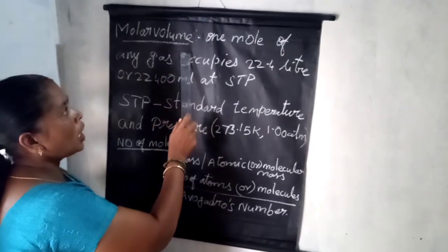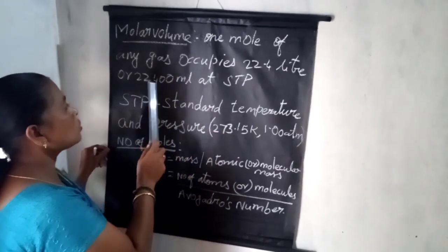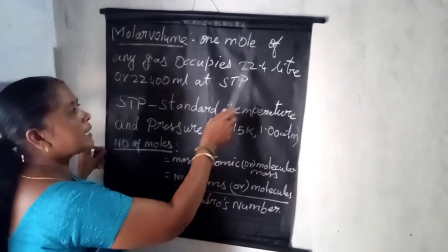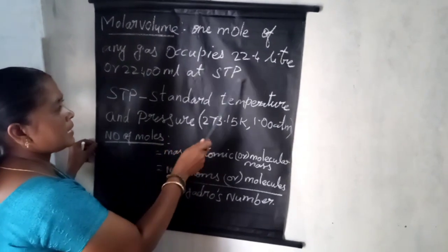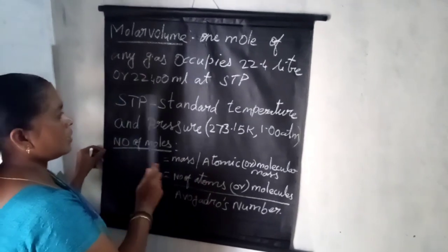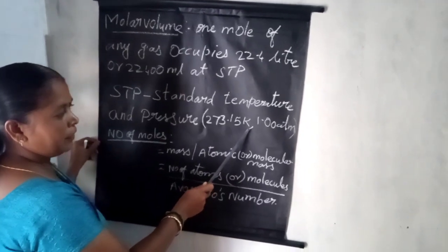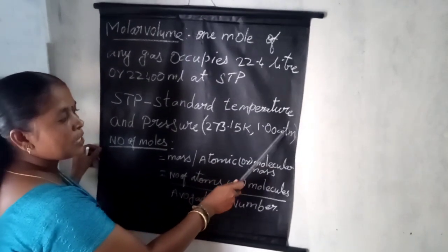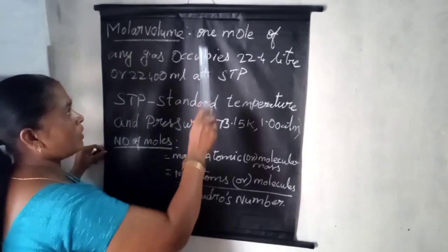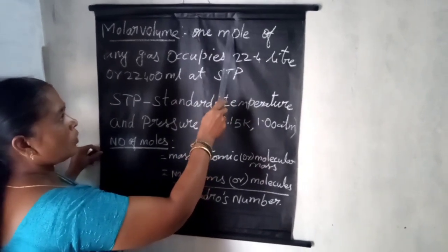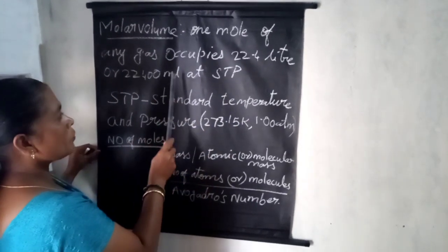Next topic: molar volume. One mole of any gas occupies 22.4 liters or 22,400 mL at STP. STP stands for Standard Temperature and Pressure, which is taken as 273.15 Kelvin and one atmospheric pressure. So one mole, containing 6.023 × 10²³ particles of any gas, occupies 22.4 liters or 22,400 mL at STP — this is known as molar volume.